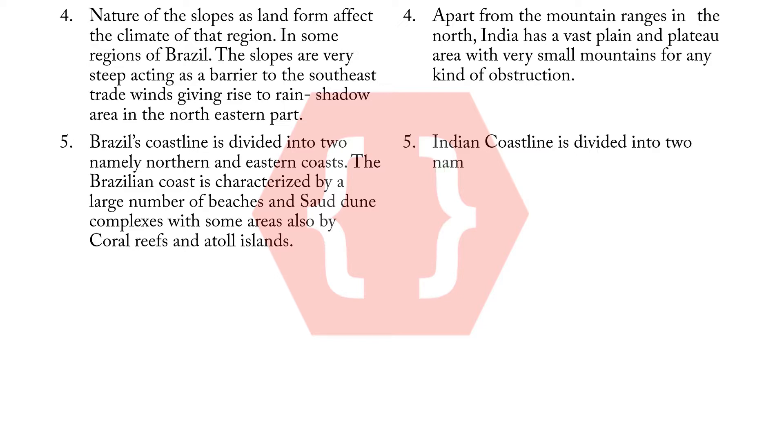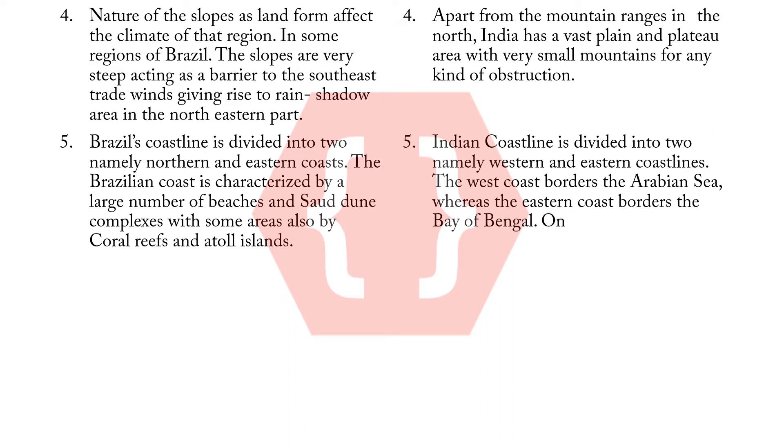5. The west coast borders the Arabian Sea, whereas the eastern coast borders the Bay of Bengal. On the western coast, estuaries are formed, whereas on the eastern coast, large deltas are formed.